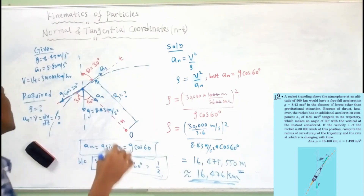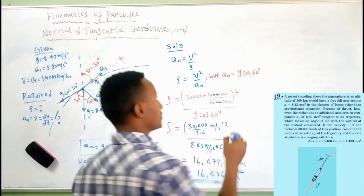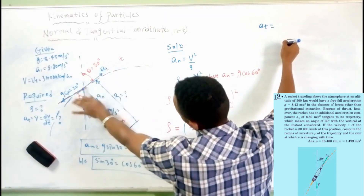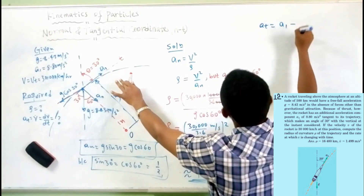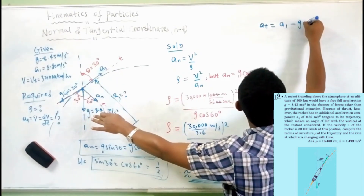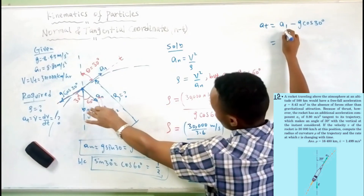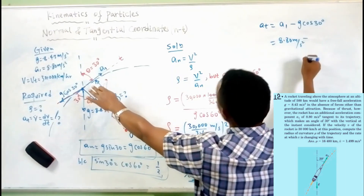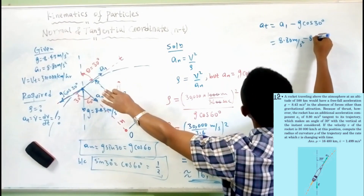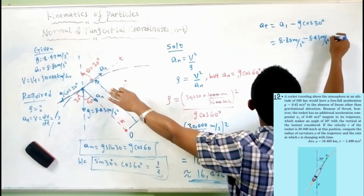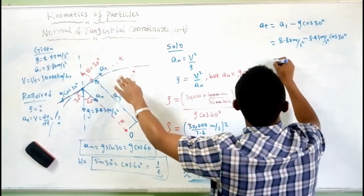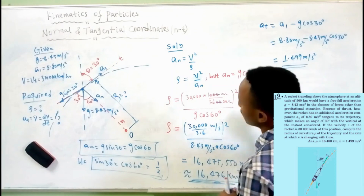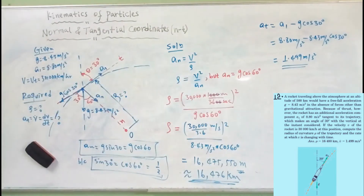Tangential acceleration along the tangential axis: A tangential equals A1 minus g cos 30 degrees, in the opposite direction. So A tangential equals 8.80 m/s² minus 8.43 m/s² times cos 30 degrees, which gives a tangential acceleration of 1.499 m/s².